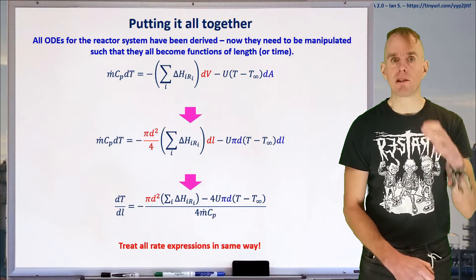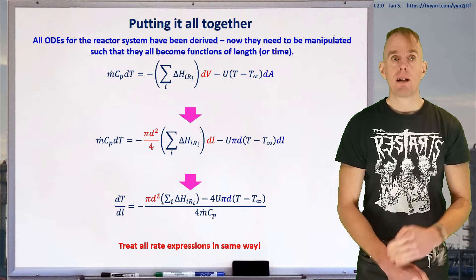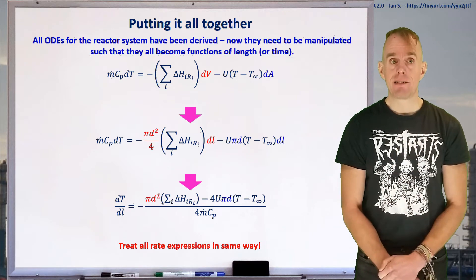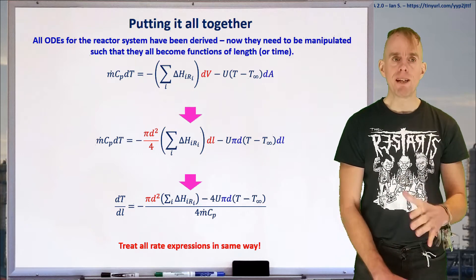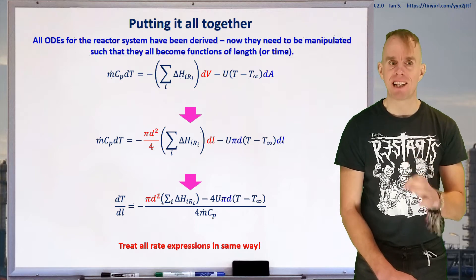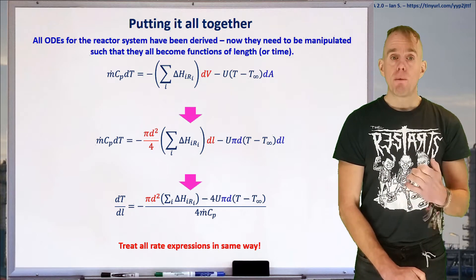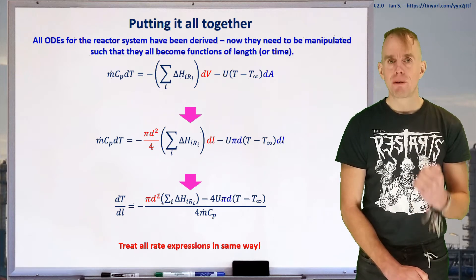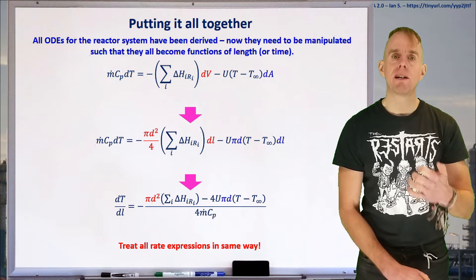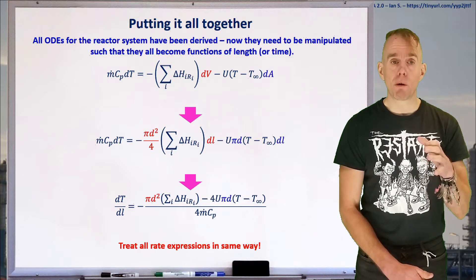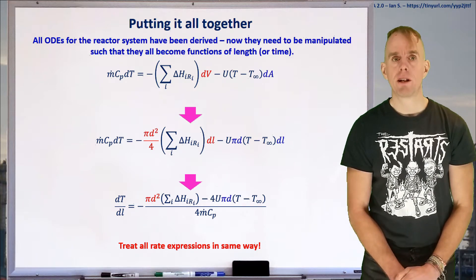What we need to do is think about how to write this more easily because we've got dT, dV and dA. These geometric terms are linked by reactor diameter. We can take our volume and area elements and write them with respect to length. dV is simply πd²/4 dl, where dl is element length and d is diameter. Likewise, dA is πd dl, the circumferential area. This means we can write a differential equation for temperature as a function of length, dT/dl.